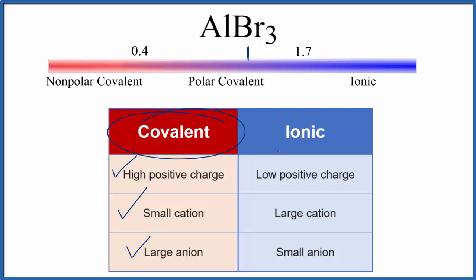This is Dr. B, answering the question whether AlBr3 is ionic or covalent. It is covalent, and the bonds between the aluminum and bromine atoms, they would be polar covalent. Thanks for watching.